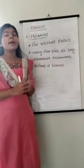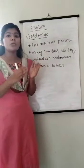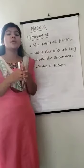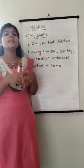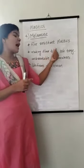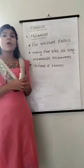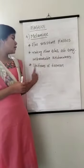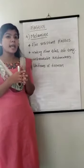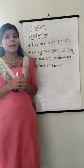The next one is melamine. Melamine is another kind of plastic, also known as fire-resistant plastic, because it does not catch fire easily. This property is utilized for making floor tiles, ash trays, and unbreakable kitchen wares. It is also used for making the uniforms of firemen because they do not catch fire easily.